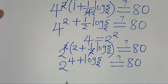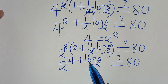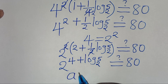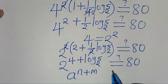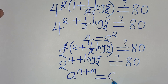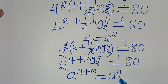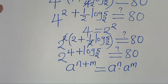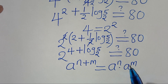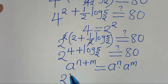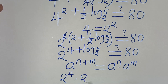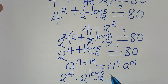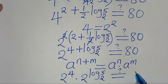Now 2 to the power of (4 + log₂5) is in the form a^(n+m), which we can express as a^n multiplied by a^m. Applying this exponent property, we have 2 to the power of 4 times 2 to the power of log₂5, and this should give us 80.